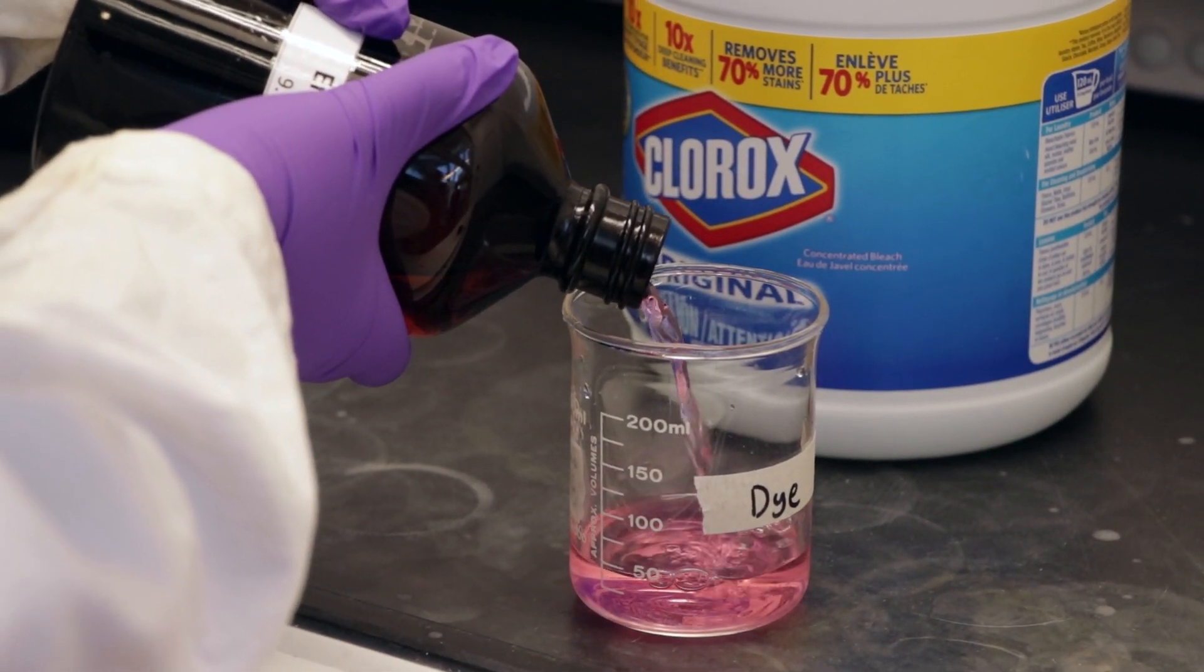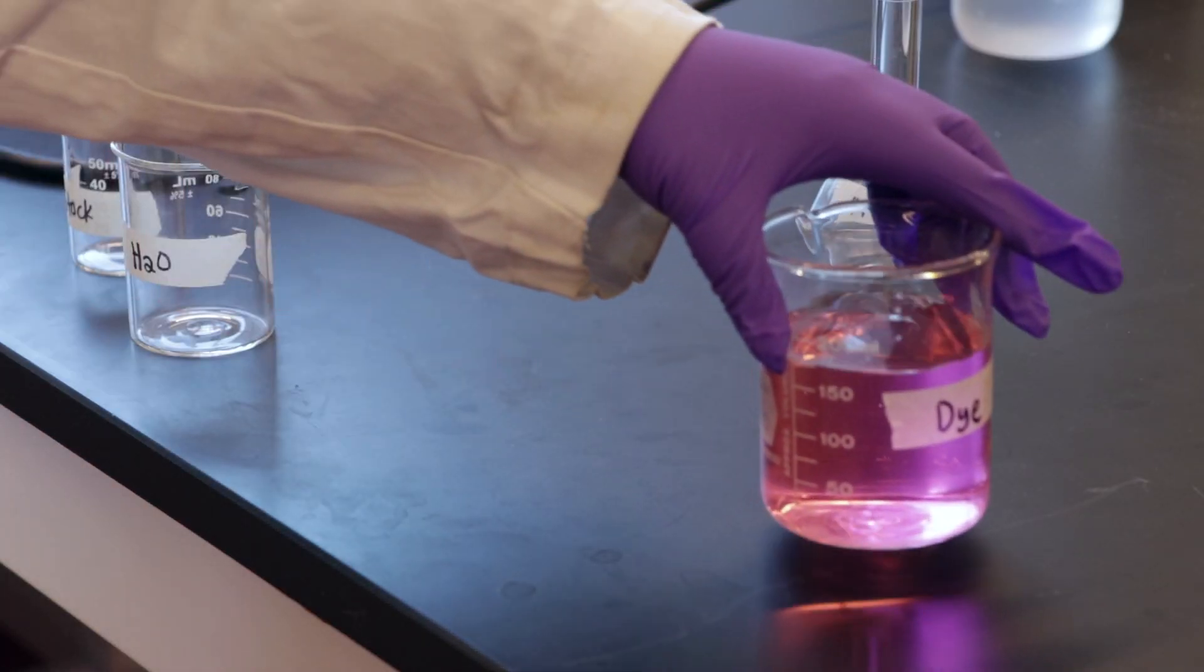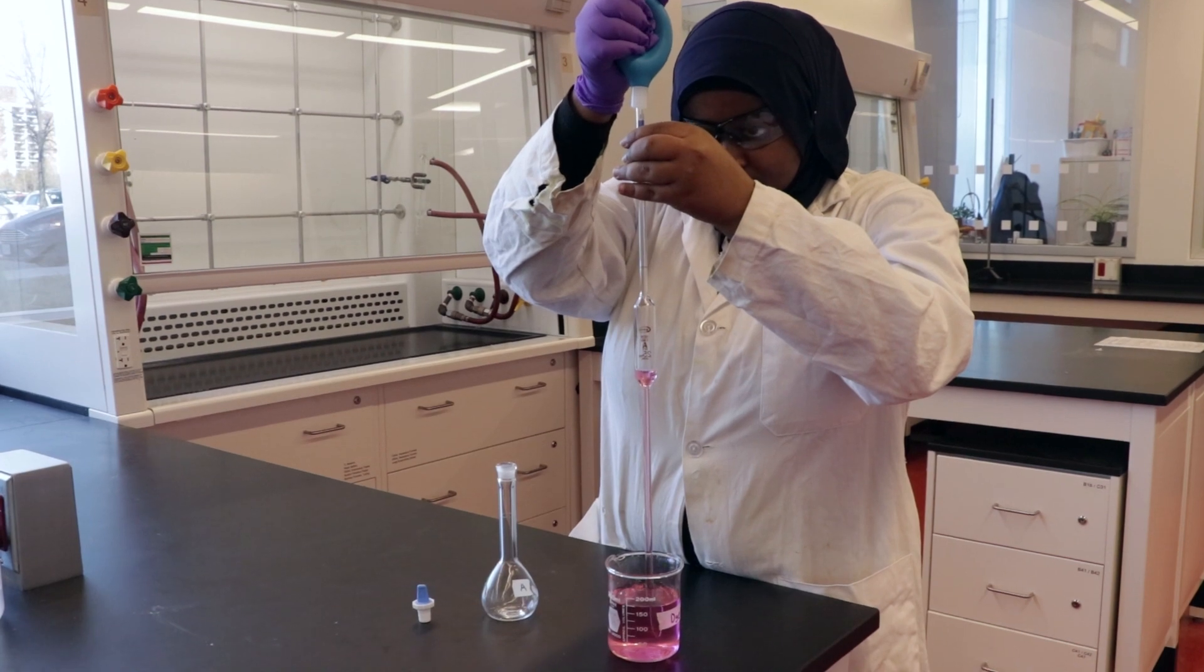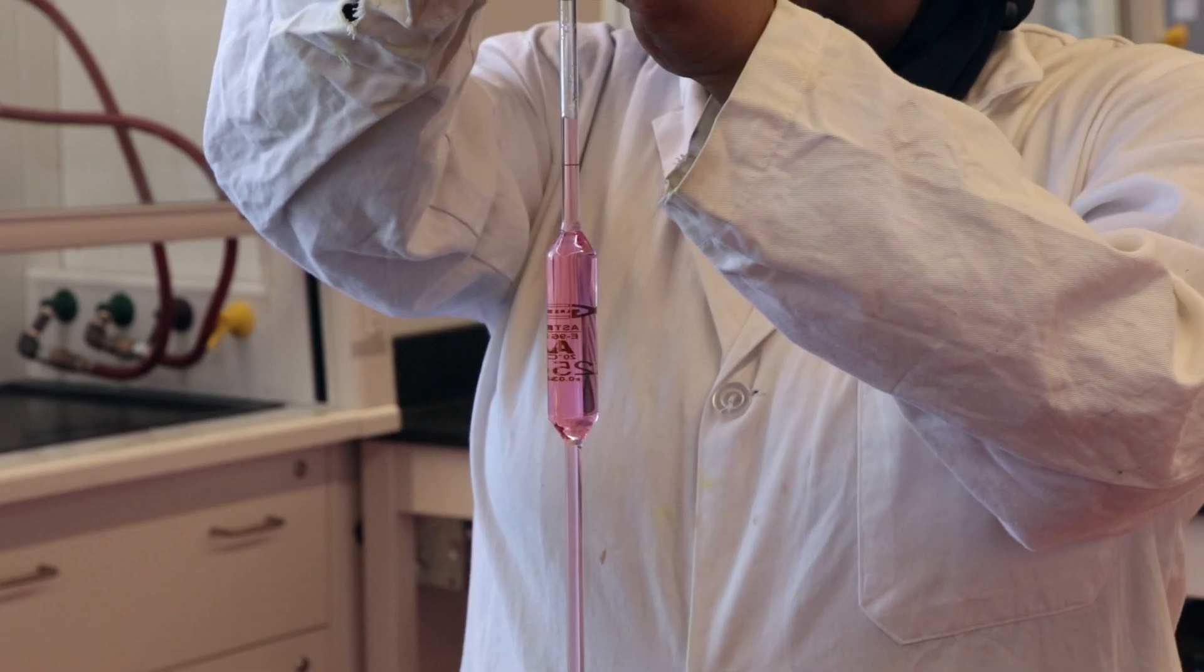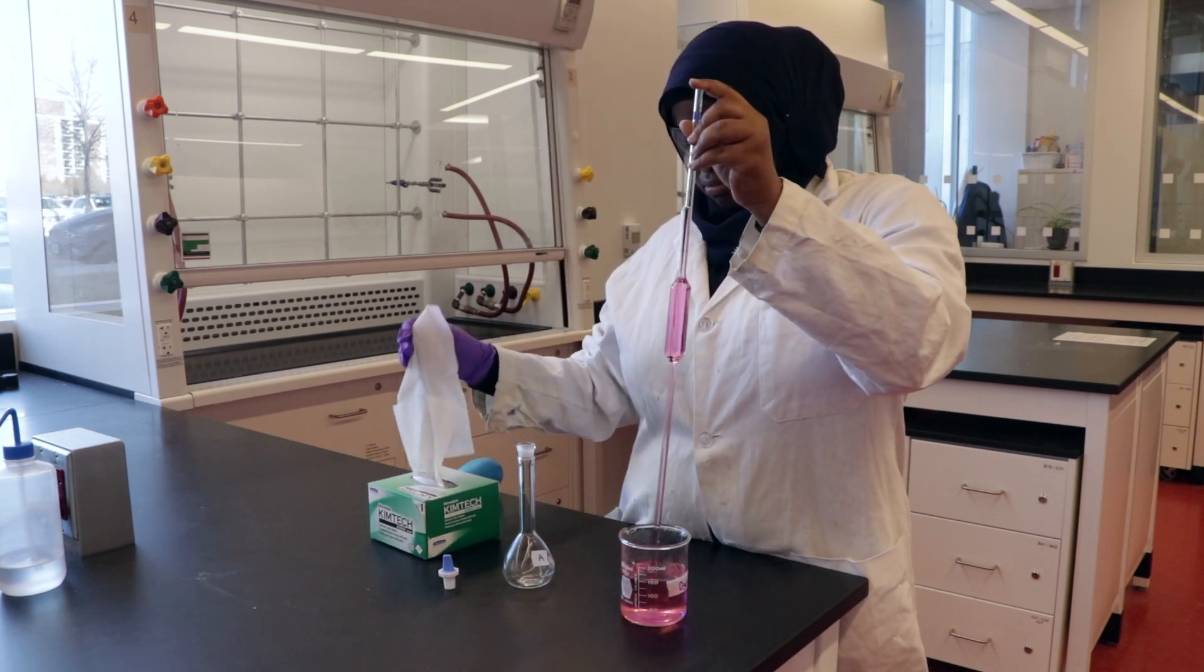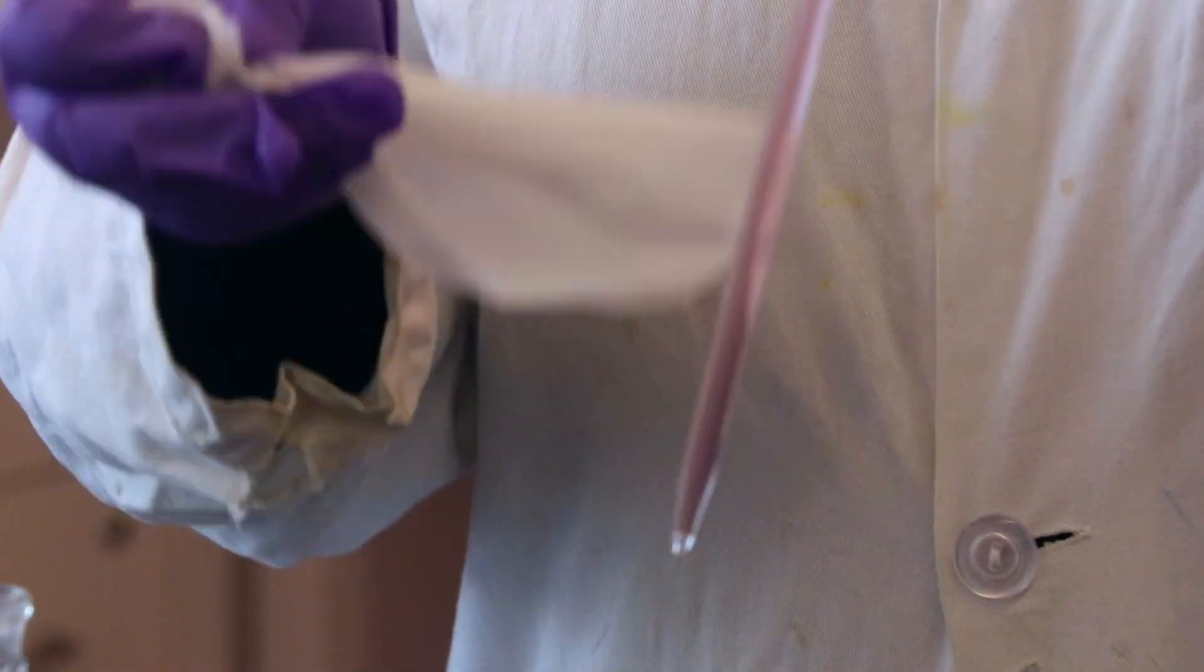Obtain between 150 and 200 milliliters of the erythrosine B dye from the TA fume hood. For flask A, pipette 75 milliliters of the erythrosine B stock solution into a volumetric flask using a long stem funnel. Do this using the 25 milliliter pipetter to pipette the solution three times into the volumetric flask.